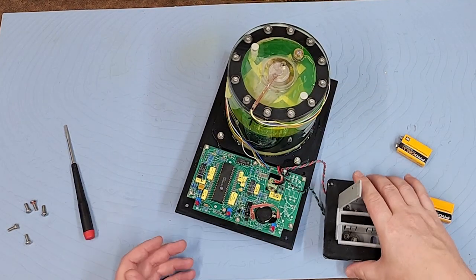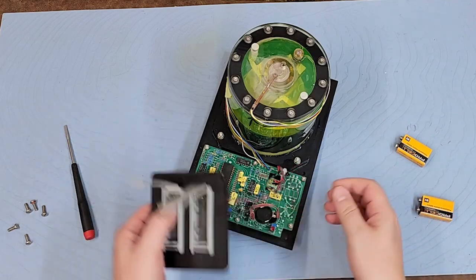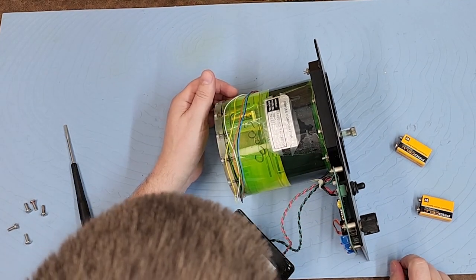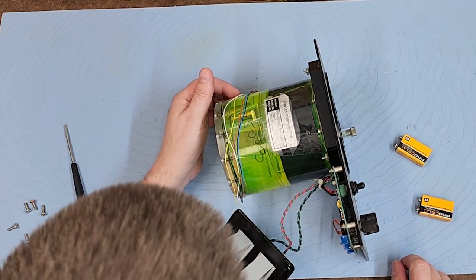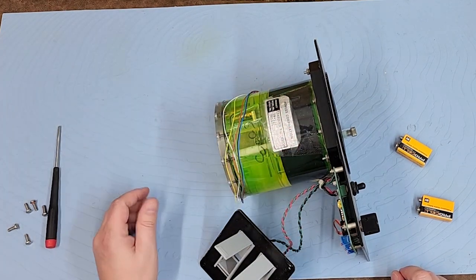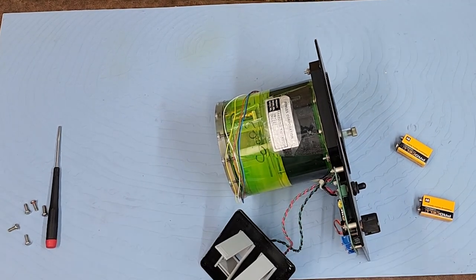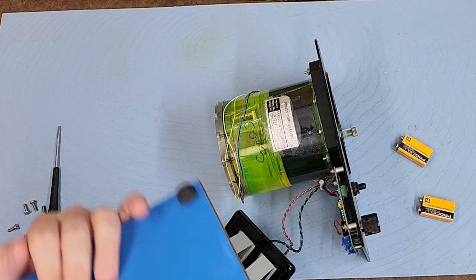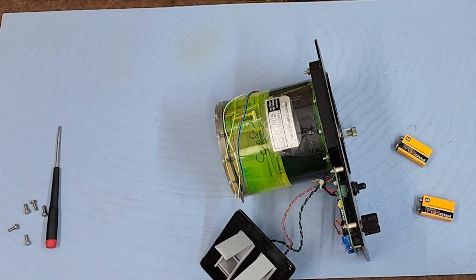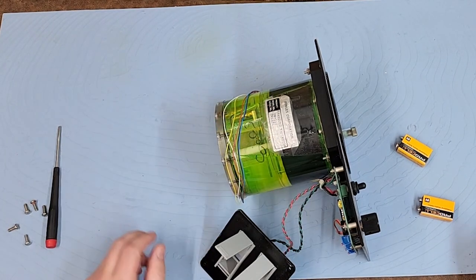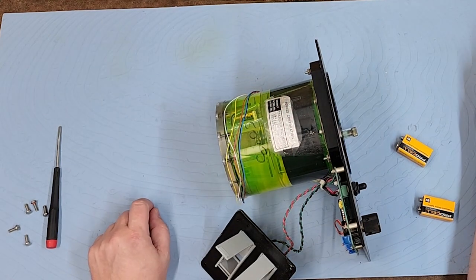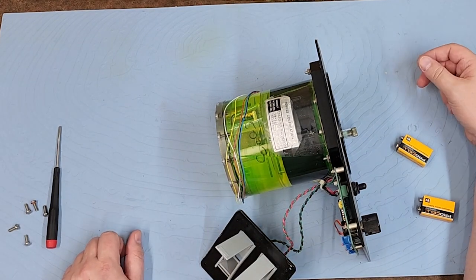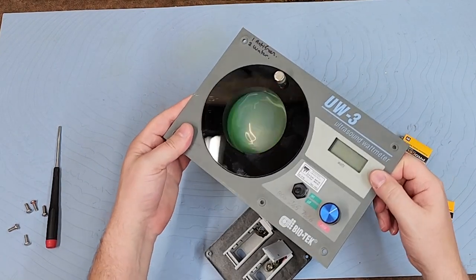Okay guys, well that would be an ultrasonic watt meter, and this model here is a UW3, and it was made by the Bowls Corporation, but I do believe it was made by Biotech - you know, the infamous Biotech guys. In fact it does say Biotech inside it. How cool is that? I had no idea. So Bowls, I've never heard of that company, but hey, you learn something new every day, right guys?